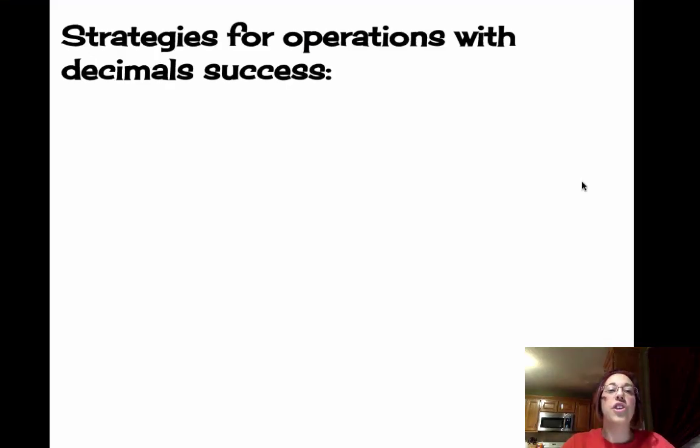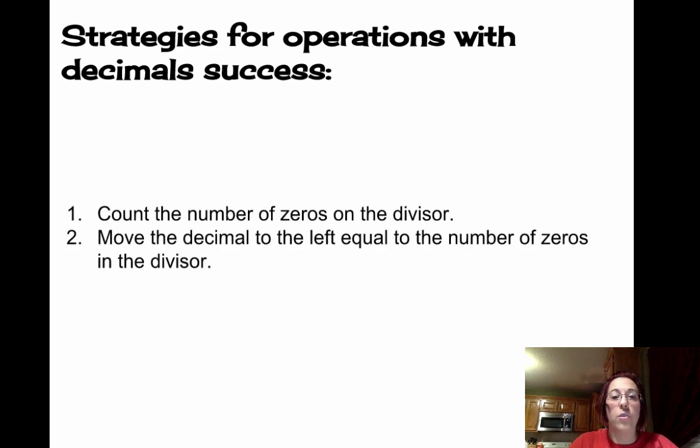Our strategies for success to be able to divide by 10, 100, and 1000 in numbers containing decimals is very much the same as multiplying, only we move the decimal the other way. For these strategies, we're going to first count the number of zeros in the divisor, and then we're going to move the decimal to the left equal to that number of zeros.